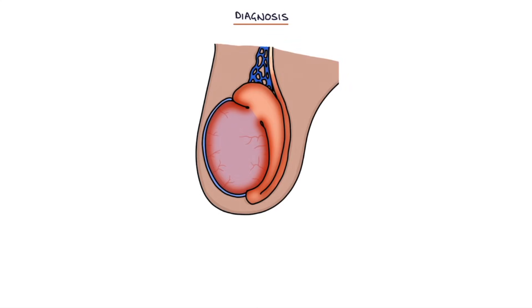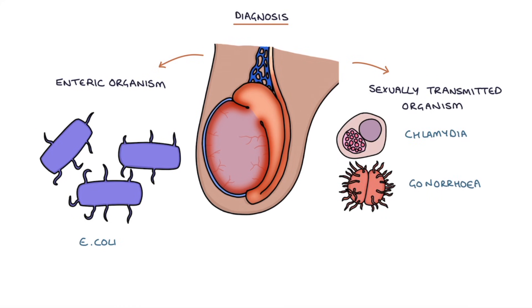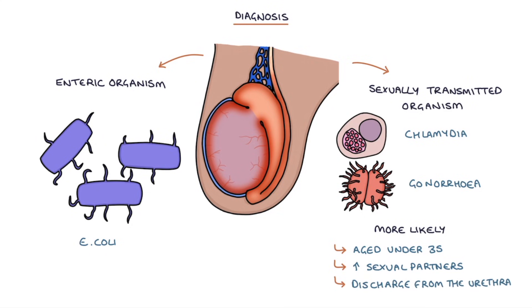Let's talk about making the diagnosis. The key with epididymal orchitis is to distinguish whether the cause is likely to be an enteric organism such as E. coli, or a sexually transmitted organism such as chlamydia or gonorrhea. The features that make sexually transmitted organisms more likely, as per the NICE clinical knowledge summaries from 2020, are aged under 35, an increased number of sexual partners in the past 12 months, and discharge from the urethra.